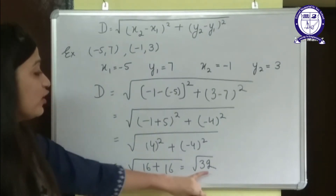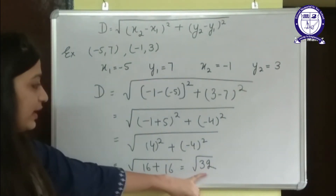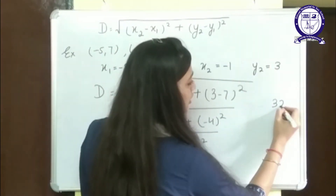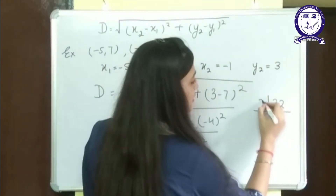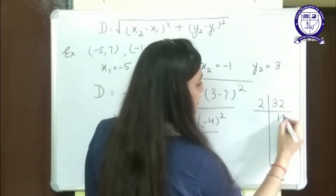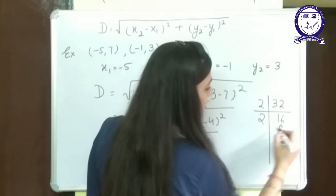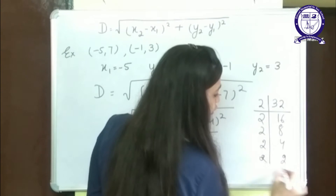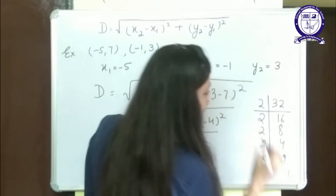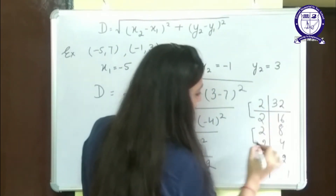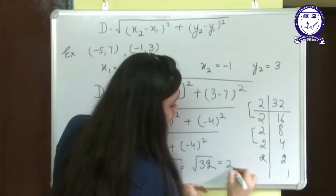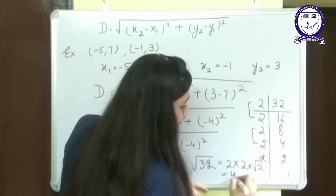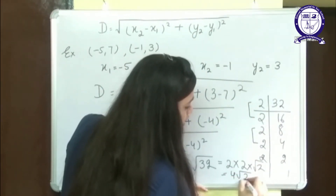We can simplify under root 32 by factorizing: 32 equals 2 times 16 equals 2 times 2 times 8 equals 2 times 2 times 2 times 4 equals 2 to the power 5. We can see two complete pairs of 2s, giving us 2 times 2 times root 2. So the final answer is 4 root 2.